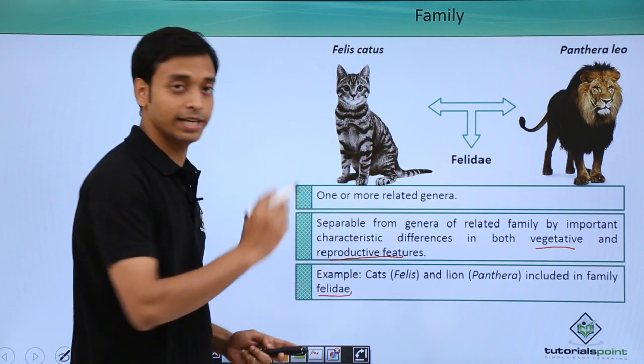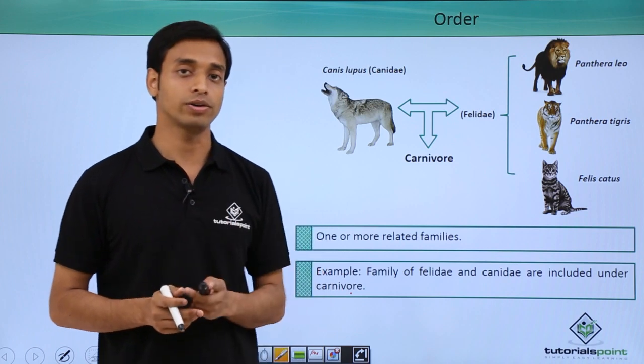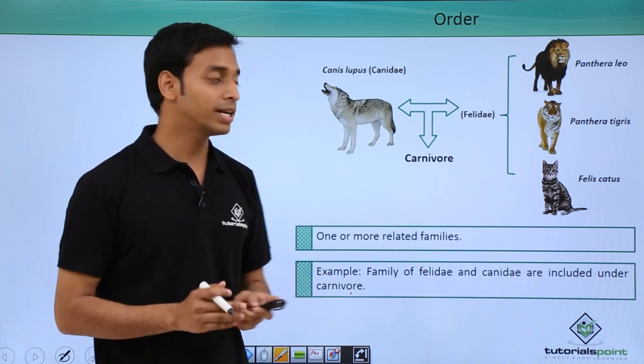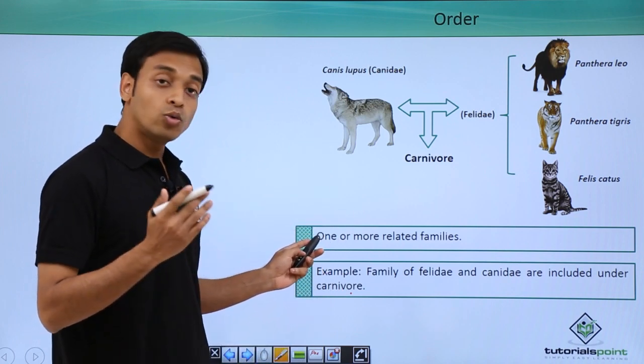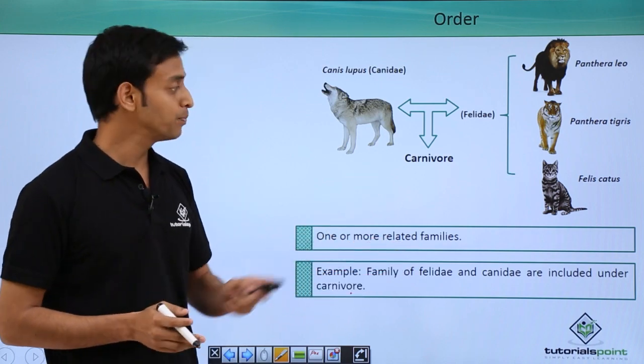The next higher category is known as order. So now I think you can estimate that order will be one or more related families. Let's take an example to understand this.